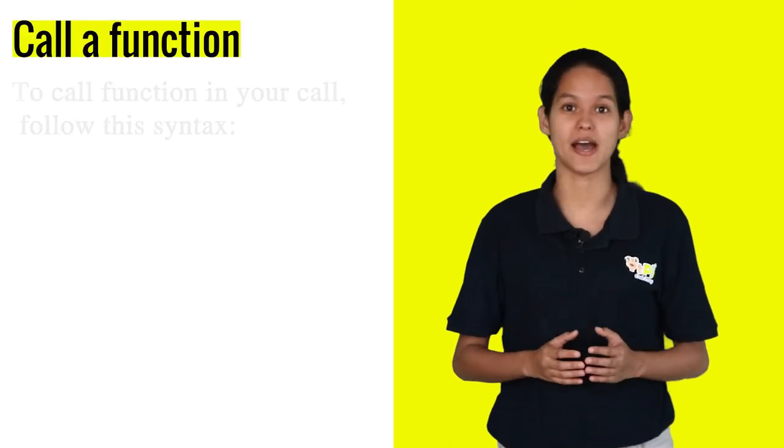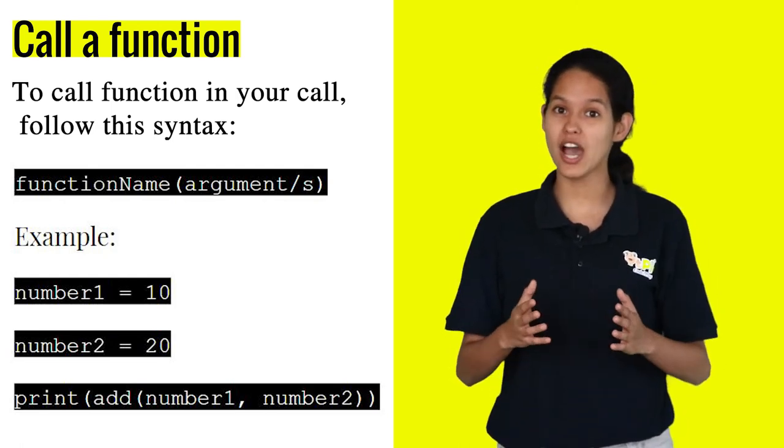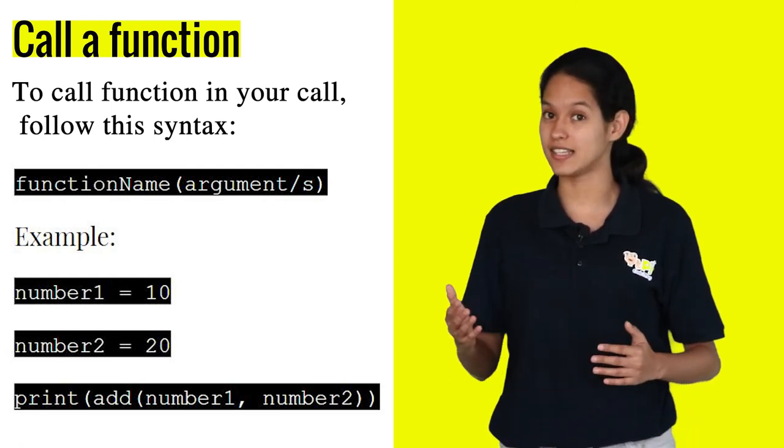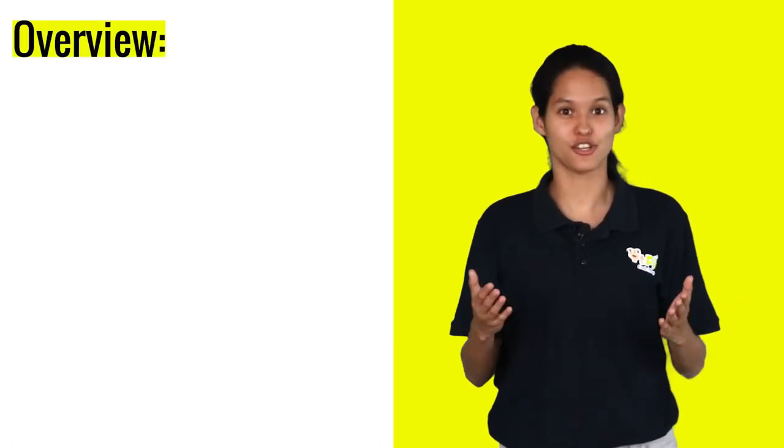In order to use this function, you have to call the function by its name. Here the function name is add and within parenthesis, you have to mention the arguments. In this case 10 and 20. You can call this function multiple times in your code while passing different arguments.